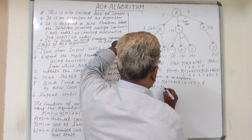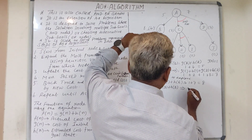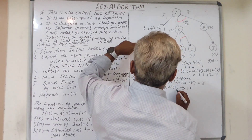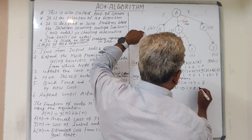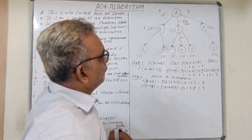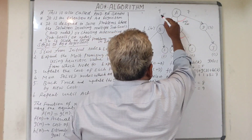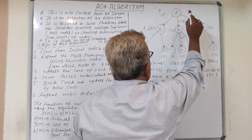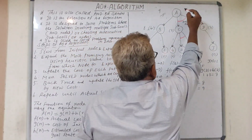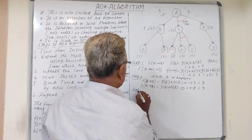Recalculating A to B: f(B) = g(B) + h(B) where g(B) = 1 and h(B) is now the new value 8, giving 1 + 8 = 9. So the old value of A to B is replaced by 9. Now comparing the two sides: A to B is 9 and A to C+D is 7. We select the minimum, so we select path A to C+D. Step 3.